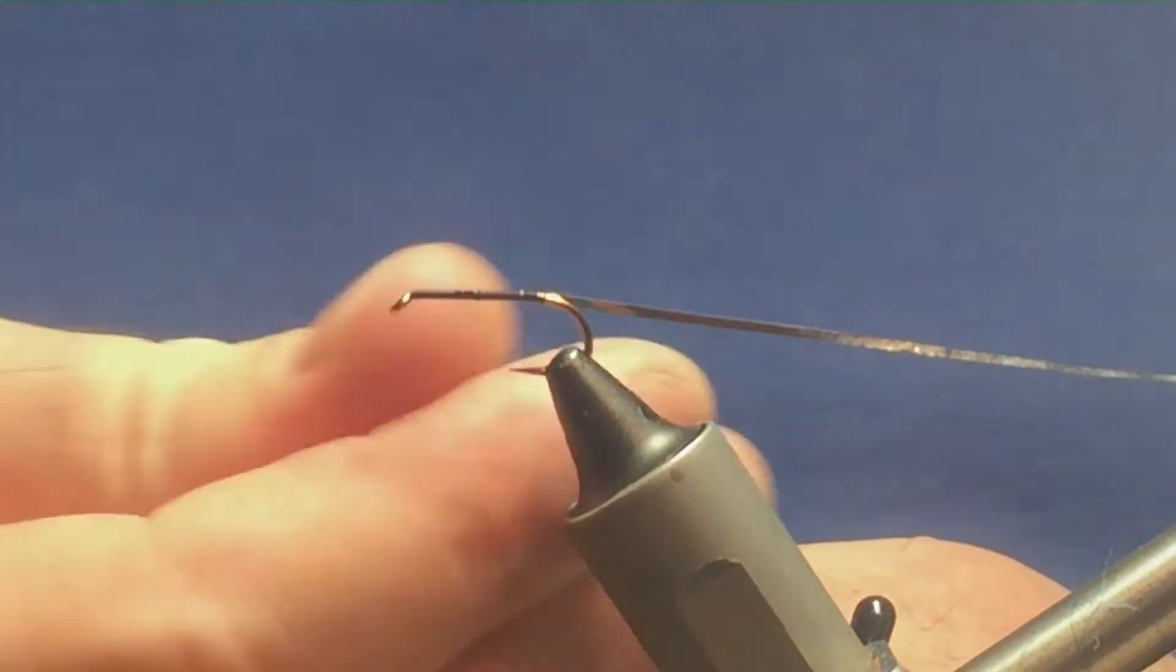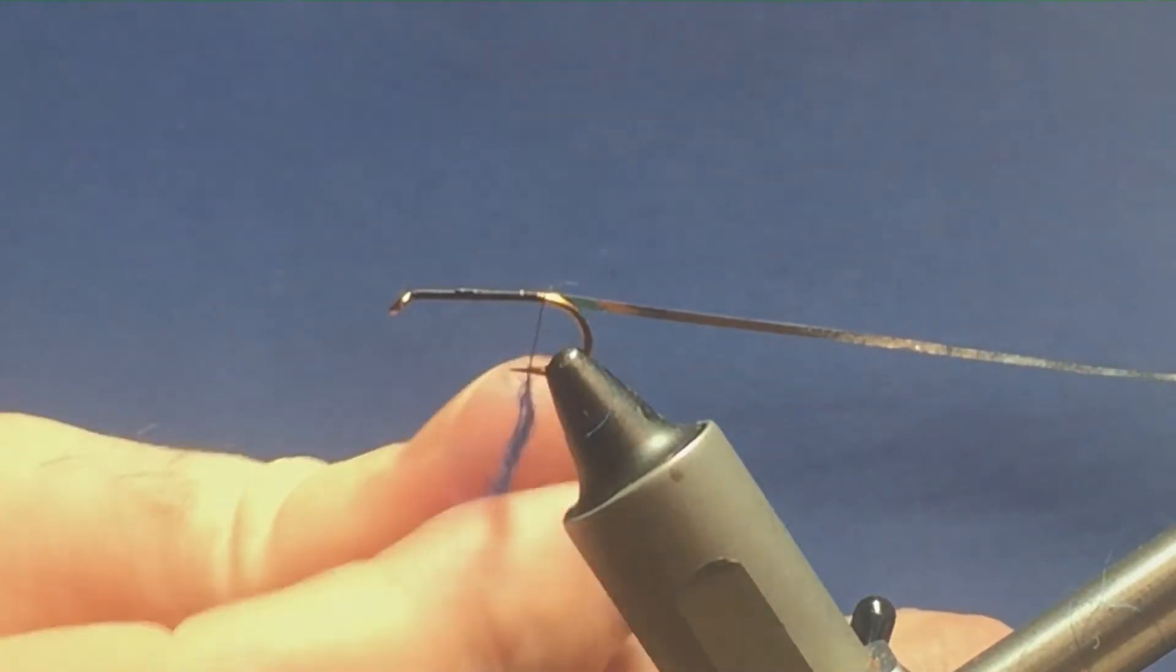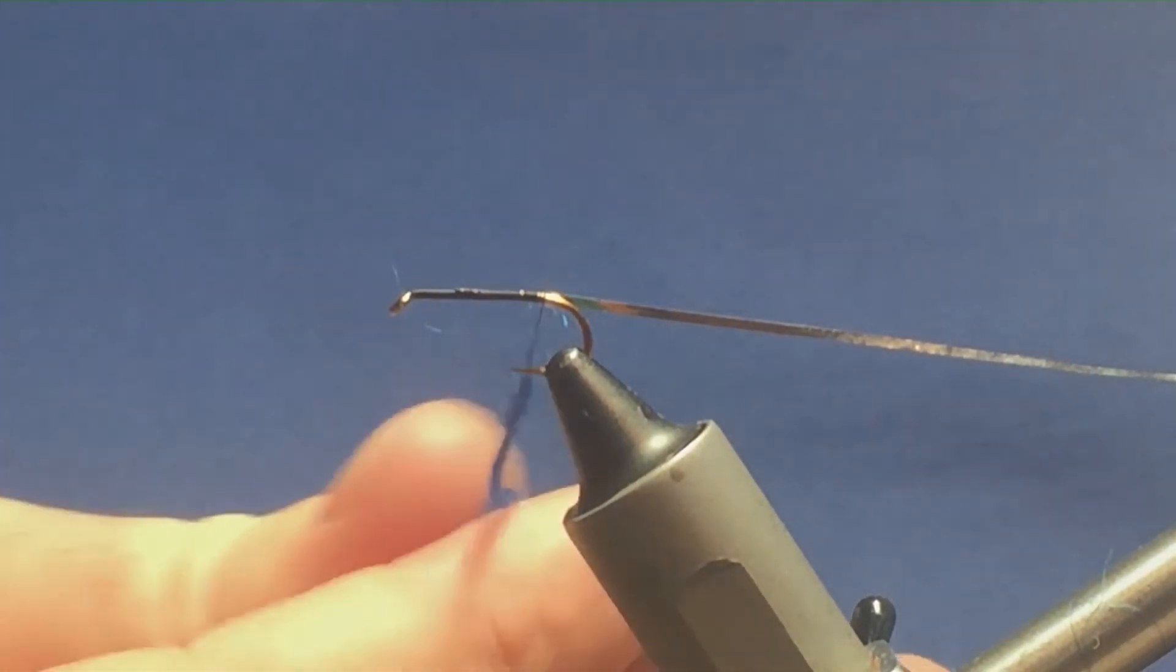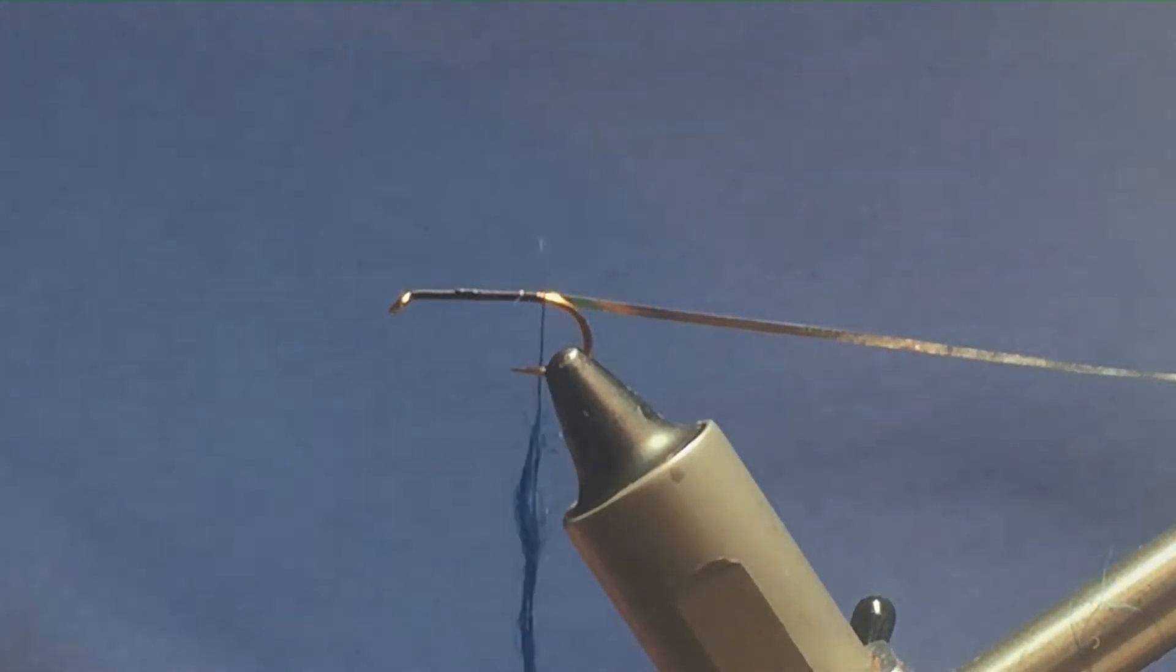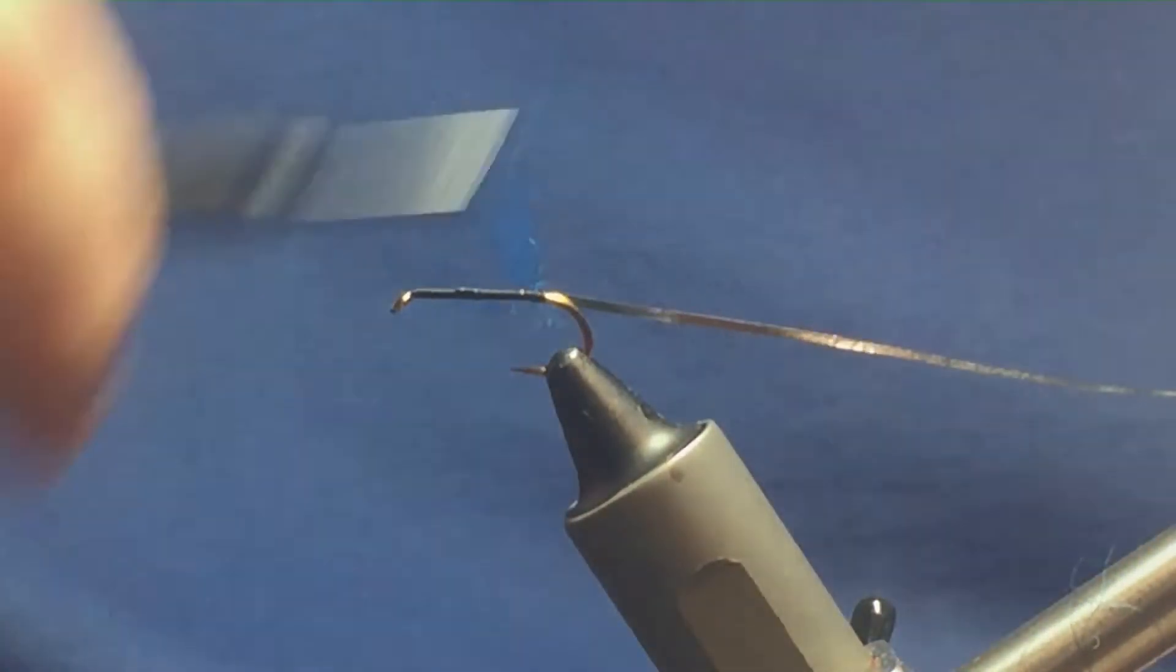take off a small pinch of the tail, just dub it on nice and tight, always taking your dubbing the one way. Nice. Just get it dubbed onto the thread, then we'll get it onto the hook.